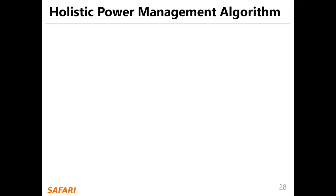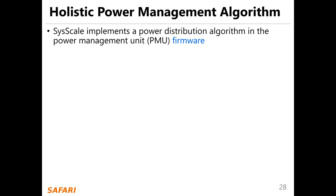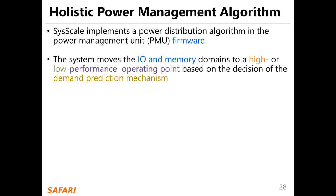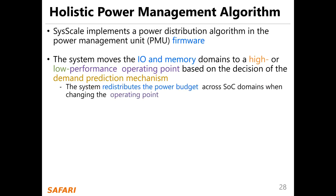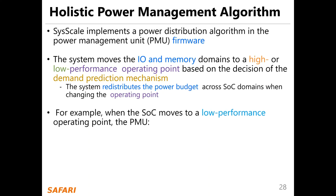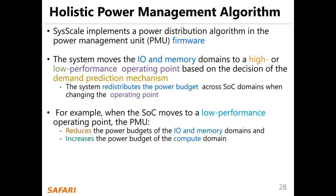The last component is a holistic power management algorithm. The system moves the IO and the memory domains to a high or low performance operating point based on the decision of the demand prediction mechanism. The system redistributes the power budget across SoC domains when changing the operating point. For example, when the SoC moves to a low performance operating point, the PMU reduces the power budget for the IO and memory domains and increases the power budget for the compute domain.